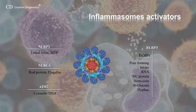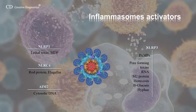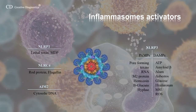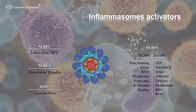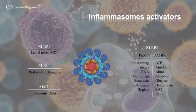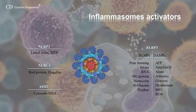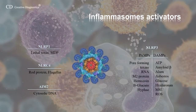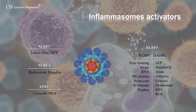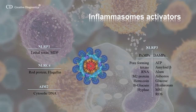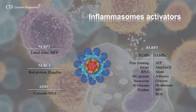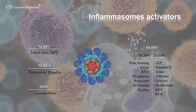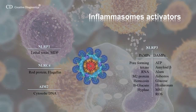including pathogen-associated molecular patterns such as pore-forming toxins, RNA, and M2 protein, and damage-associated molecular patterns and environmental irritants such as ATP, amyloid beta, alum, asbestos, glucose, and reactive oxygen species. Other complexes, such as NLRP6-containing complexes, regulate interleukin-18 production, and Pyrin probably regulates an inflammasome complex containing ASC but not NLRP3 that activates interleukin-1.